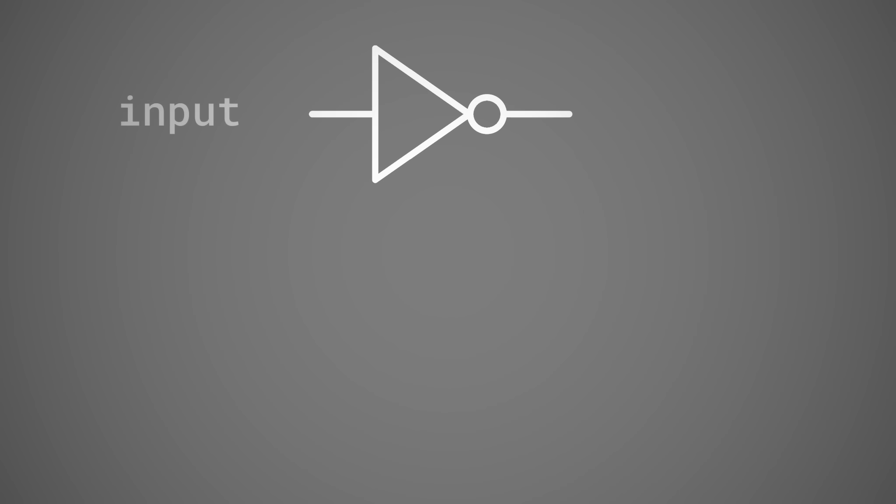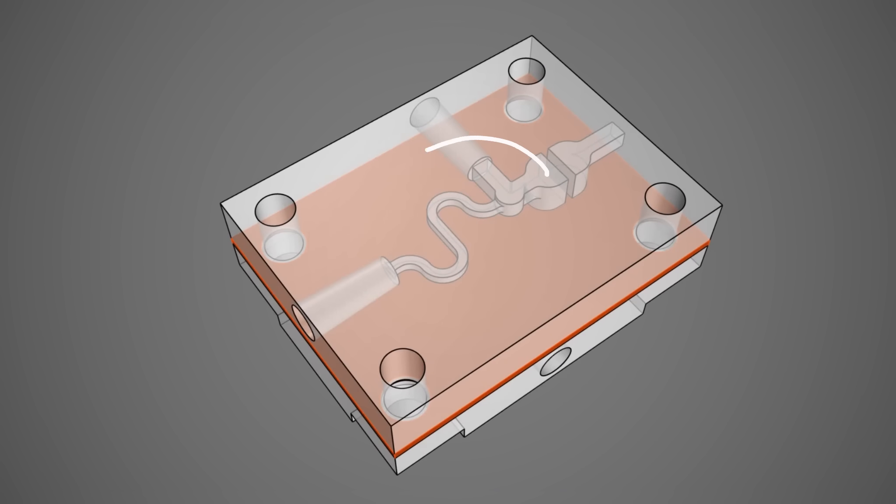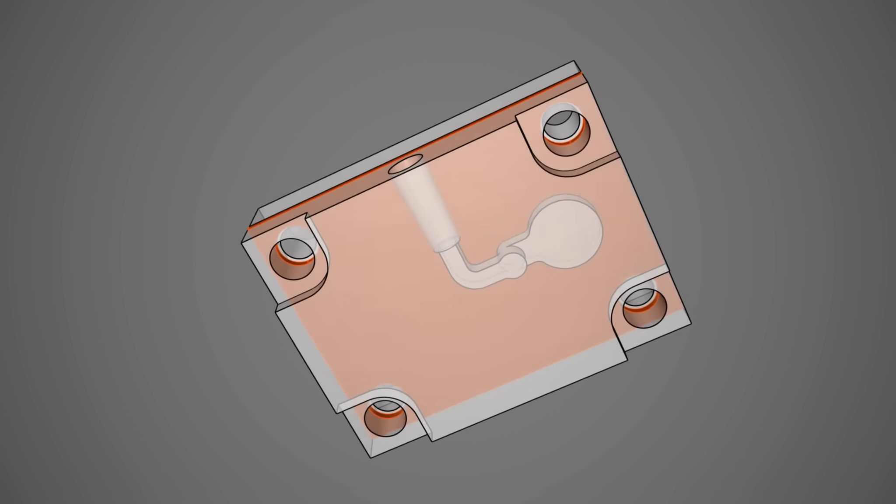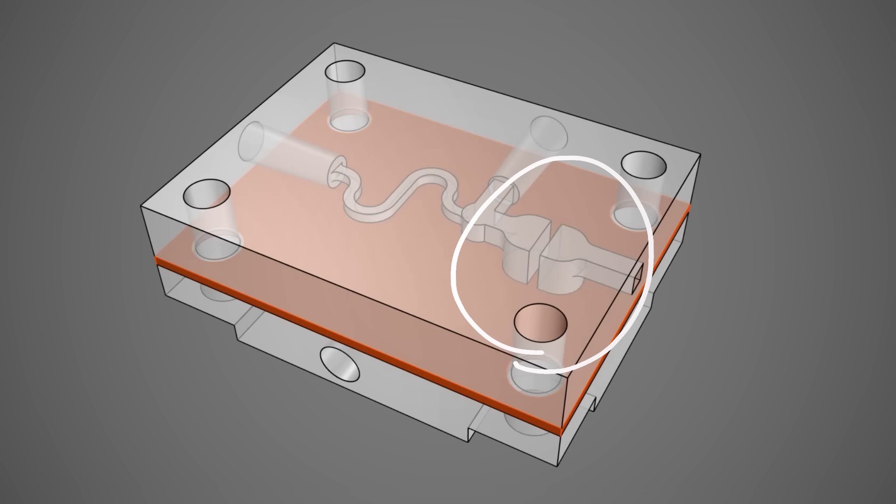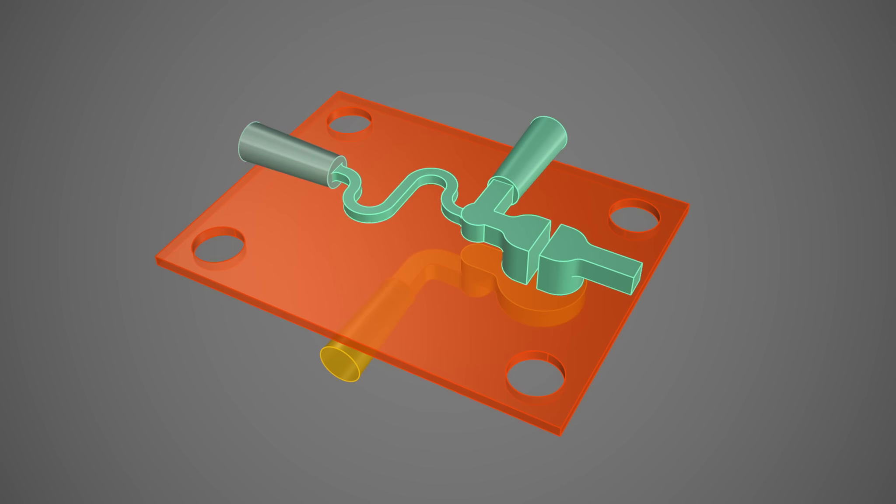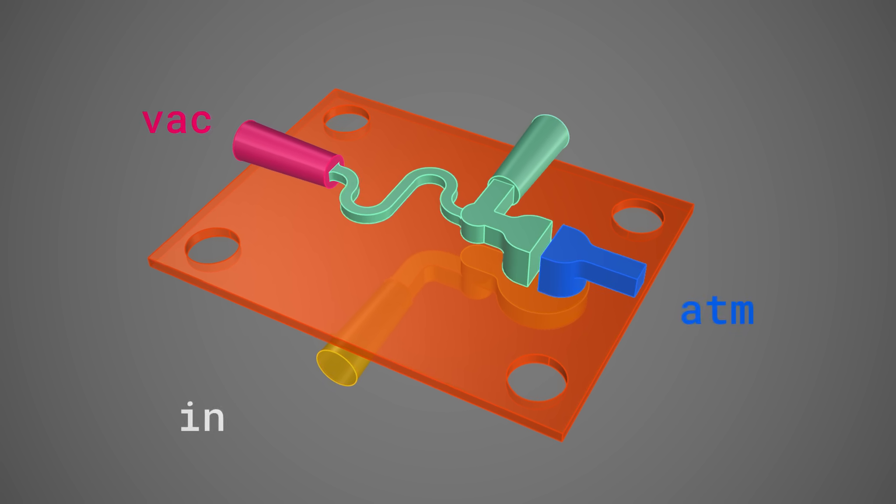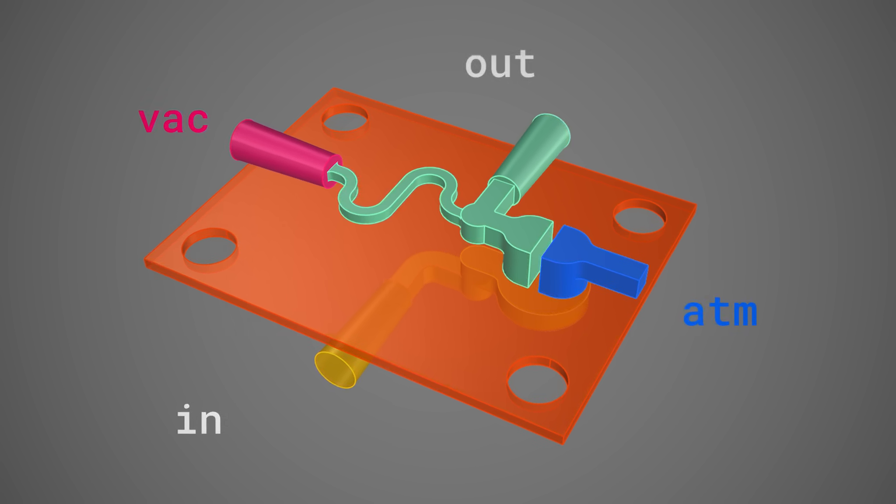Now, let's build an inverter. It flips the signal. Input 0, output 1. Input 1, output 0. That's all. Here's the design. Inside you can already spot a resistor and a transistor. The inverter has four connections: vacuum in, atmosphere, an input to control the transistor, and an output.